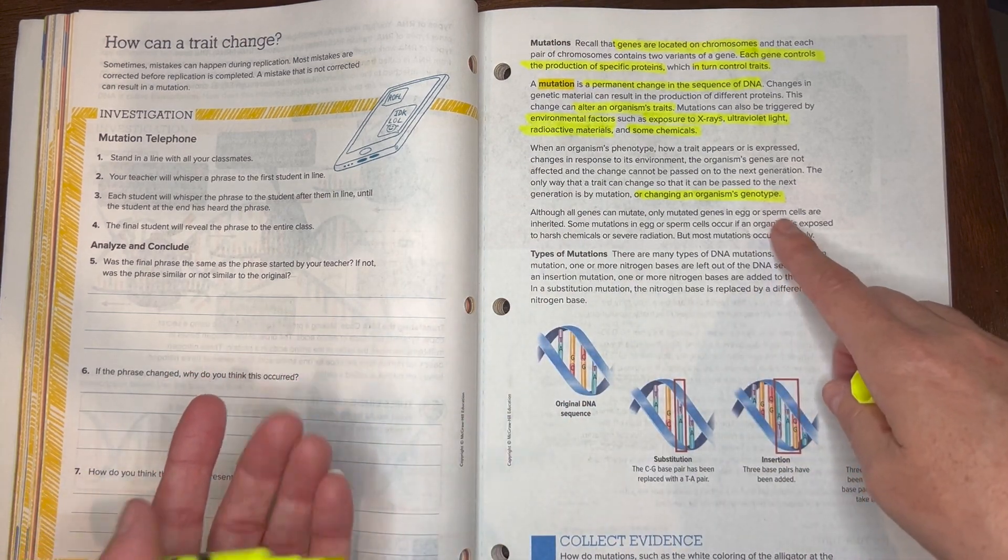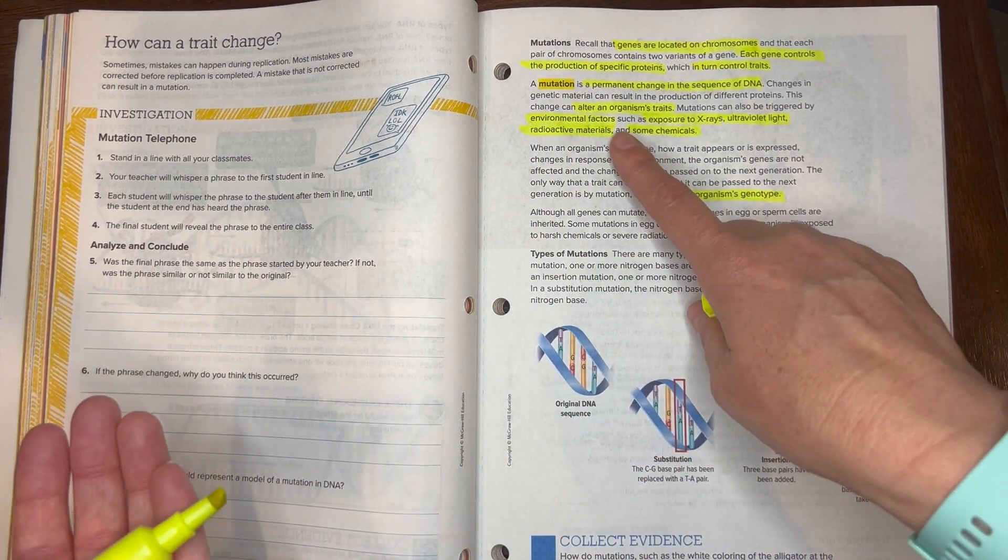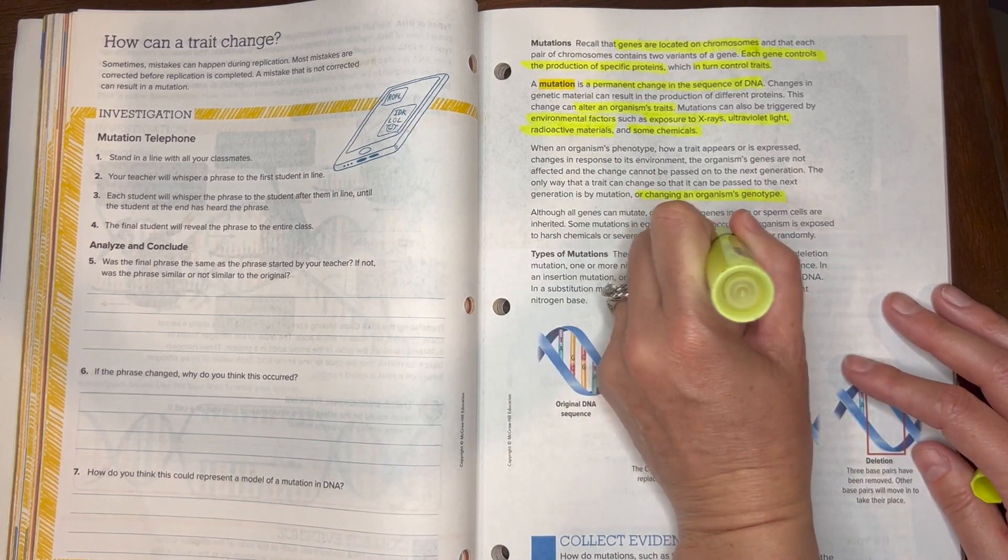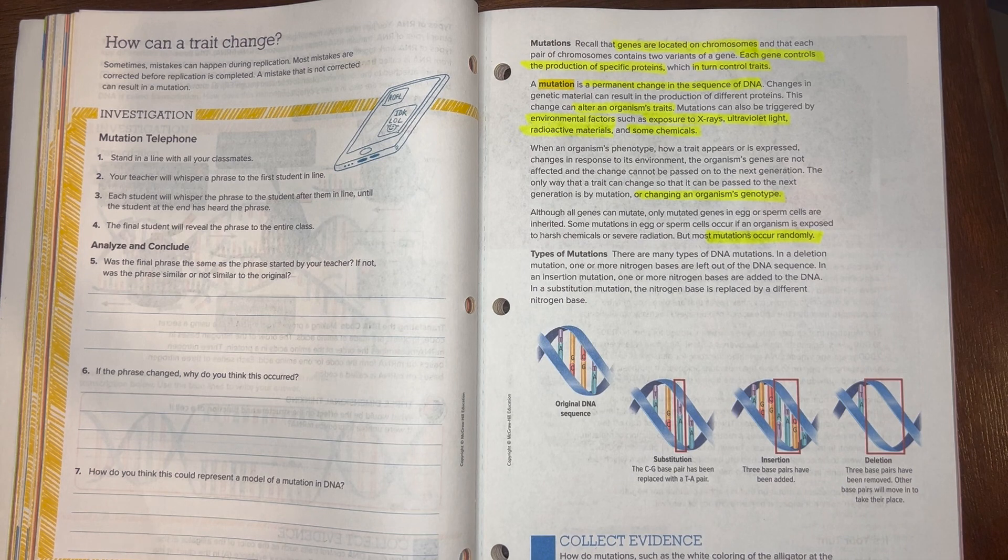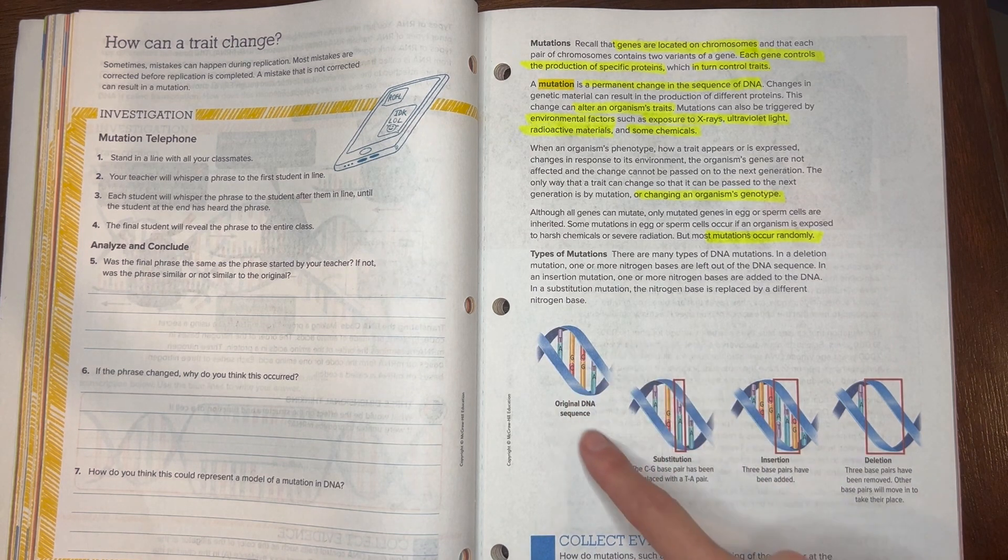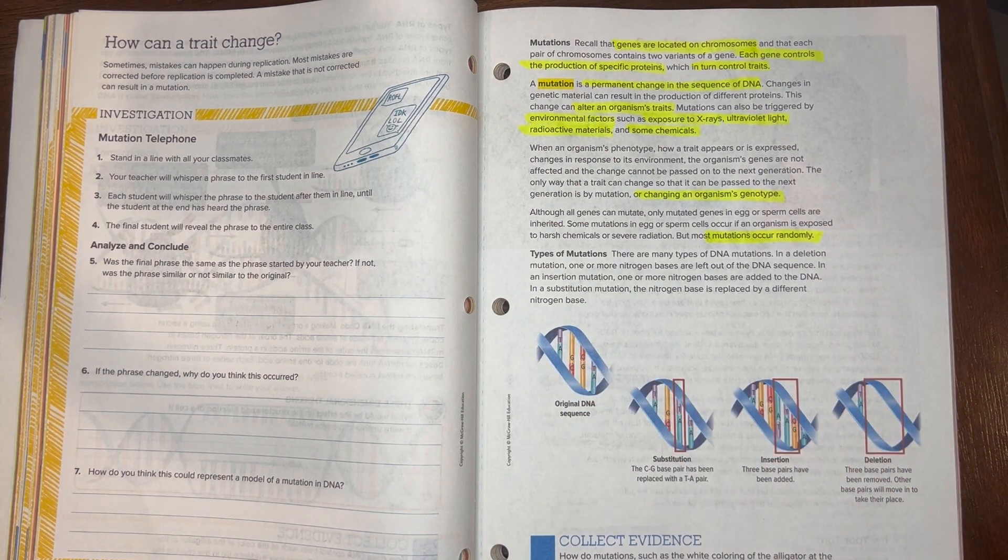Even though this happens in your genes and there's some environmental factors, most mutations actually happen randomly. Now there's different types of mutations, so if you look down here there's some different types of mutations.